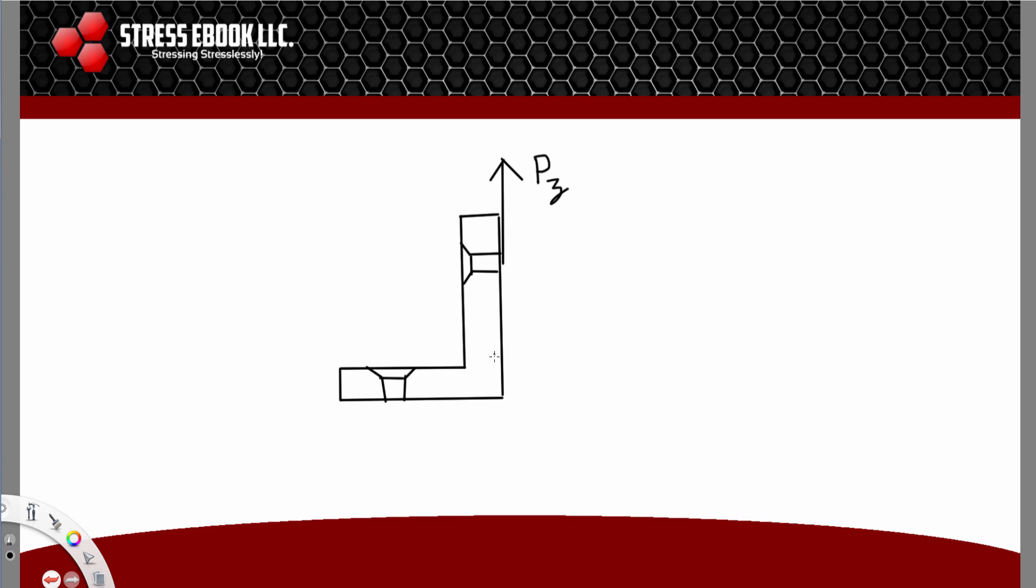Now that we have a load PZ, this load is transmitted through this vertical part of the bracket, and then there would be a moment applied in this area. At the end, the load goes into this fastener which is going to react this load down. This reaction would be RFT (fastener reaction).